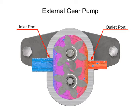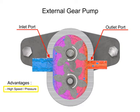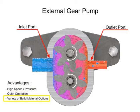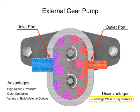The advantages of external gear pumps are their high speed and pressure, relatively quiet operation, and that their design accommodates a wide variety of materials. Disadvantages include bushings in the liquid area can become worn and that they have fixed end clearances.